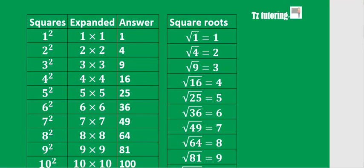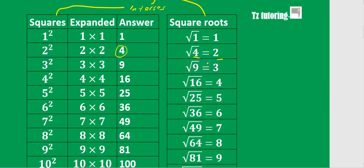The inverse of a square is a square root — squares and square roots are inverses. So if 2 squared gives you 4, then the square root of 4 is 2. You're just going back, that's why we say they are inverses. And if 5 squared gives you 25, then the square root of 25 is 5.